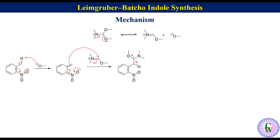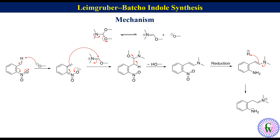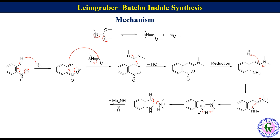Elimination of methanol gives enamine, which after reduction of nitro to amine gives another enamine. Under the reaction condition, after protonation, this gives an iminium ion which undergoes cyclization to produce 2-(dimethylamino)indole intermediate. Proton transfer gives N,N-dimethyl indole intermediate, which eliminates dimethylamine and a proton to produce indole.